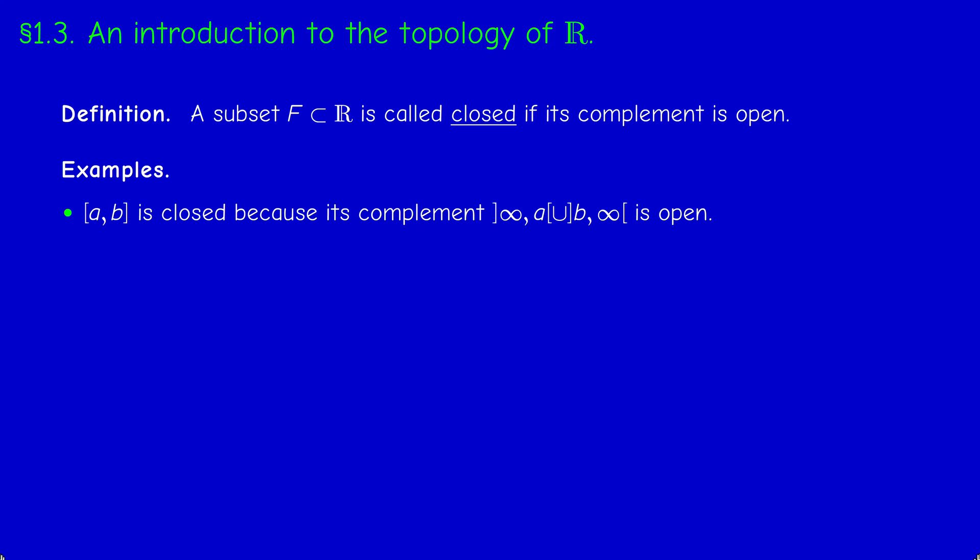For example, how do we know that the interval [a,b] with endpoints included is a closed set? Well, if you want to go back to the definition, just look at the complement. What is the complement of [a,b]? It's the union of the interval (-∞,a) ∪ (b,+∞). Now this is open, and this is also open. The union of two open sets is an open set, so this is open. So the complement of [a,b] is open and therefore [a,b] with endpoints included is a closed set.